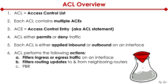ACLs are used in policy-based routing. They're used in network address translation, and when used in NAT, they're primarily used not for permitting or denying traffic but for matching traffic. In VPN, similar functionality — they're used for matching traffic. And in QoS, same idea: we use ACLs to match traffic.